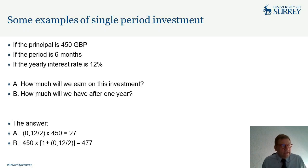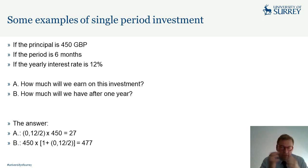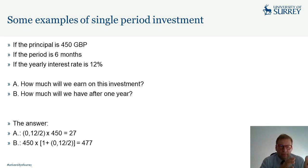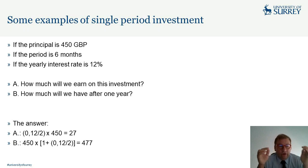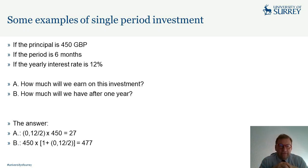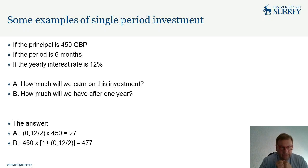When the period is six months and the yearly interest rate is 12 percent, we divide the annual rate by 2. The interest earned is 450 × 0.12/2 = 27, so 450 + 27 = £477. Alternatively, using the formula: 450 × (1 + 0.12/2) = £477.